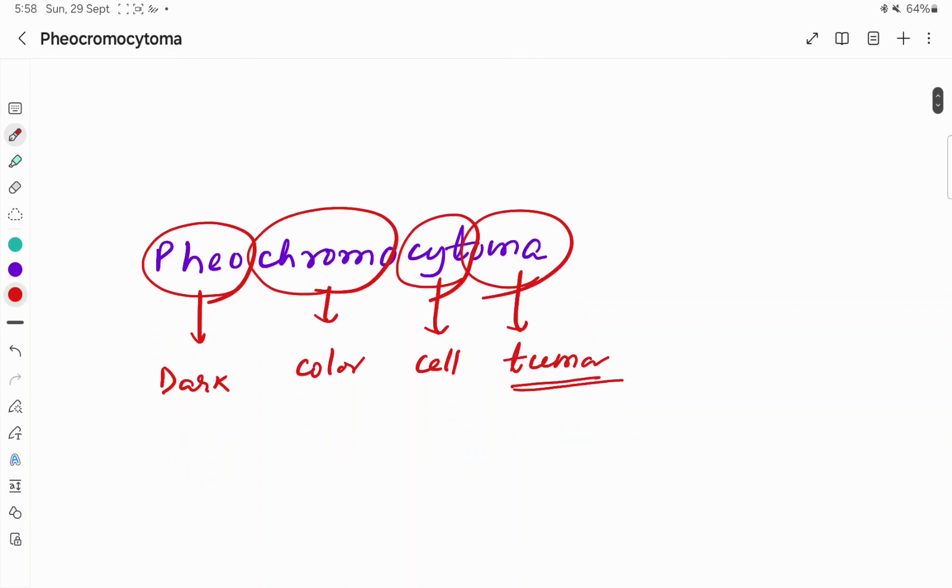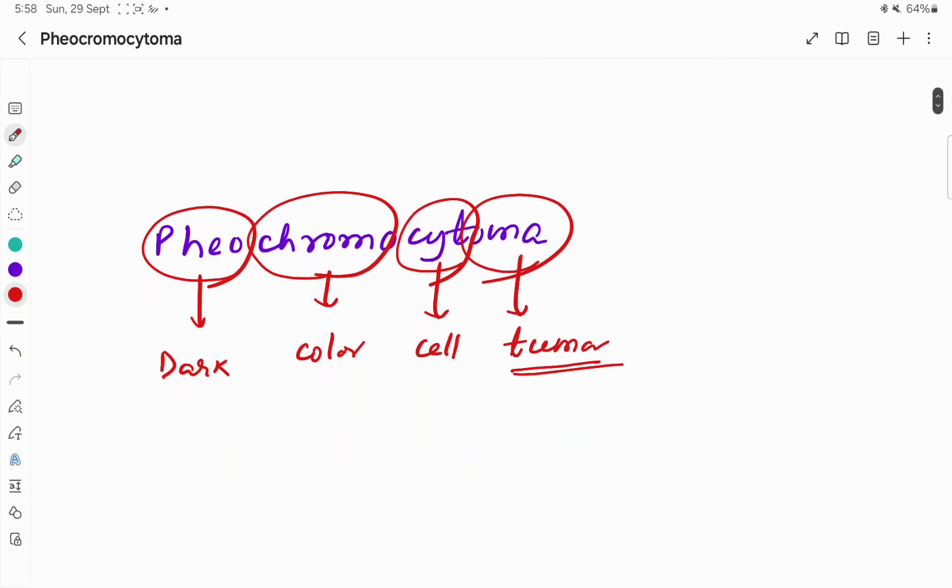Pheochromocytoma can be divided into four words. Pheo means dark, Chromo means color, Cyto means cell, and Oma means tumor. So Pheochromocytoma is a tumor condition of the adrenal gland.